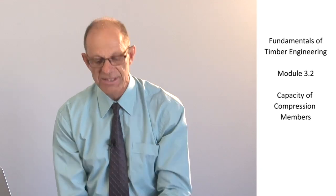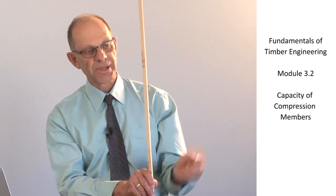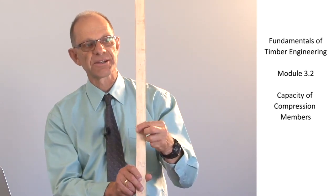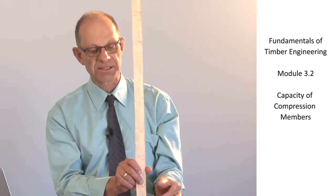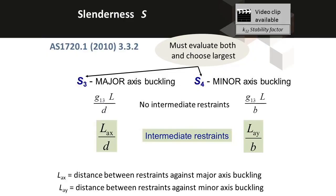We evaluate the slenderness for minor axis buckling and for major axis buckling separately using very similar formulae. For major axis, the slenderness relates to the larger cross-sectional dimension. For minor axis, the slenderness relates to the smaller cross-sectional dimension. We evaluate both separately, and whichever slenderness is the larger one is the one we use in evaluating the k12 factor.